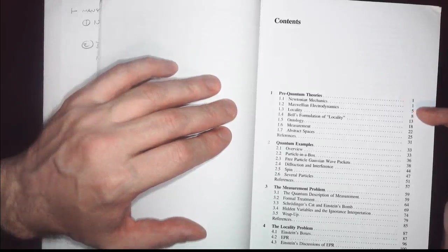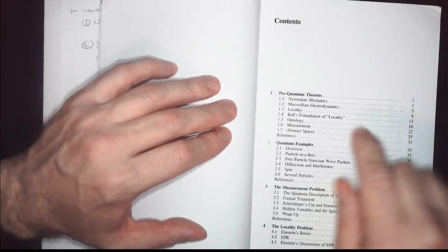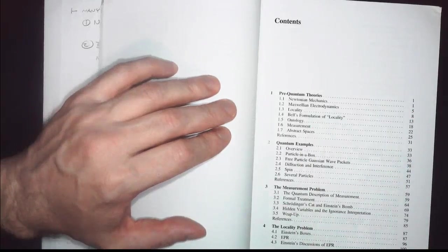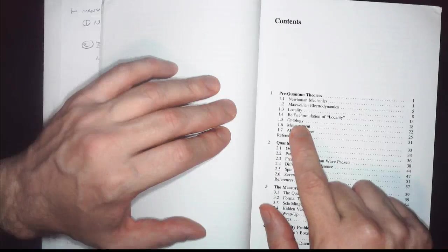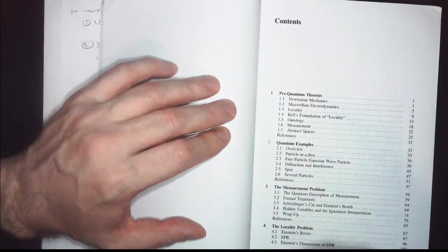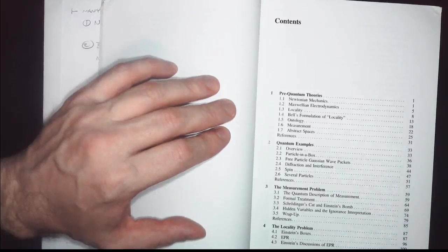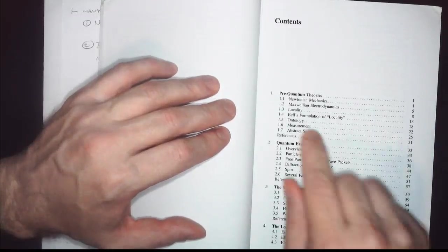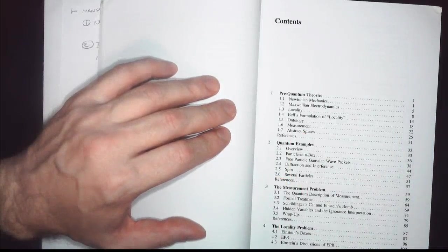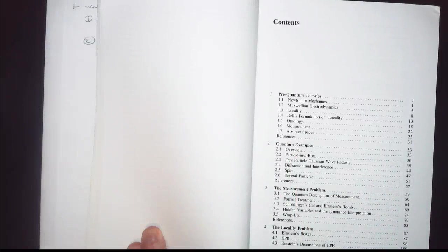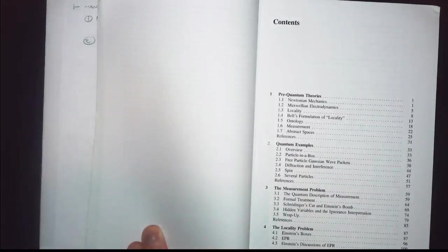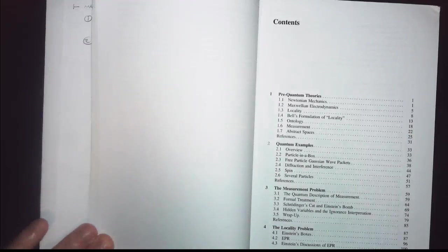Maxwellian Electrodynamics, a couple hundred years later. Then he starts talking about things like locality, and we get into Bell's formulation of locality right away. We talk about those ontology things, the things that you have to have in your theory. What makes up the objects of your theory? Measurement. This is the big problem, the measurement problem. And abstract spaces, that's something you really have to worry about in quantum mechanics, because usually we're talking about something like a state space.